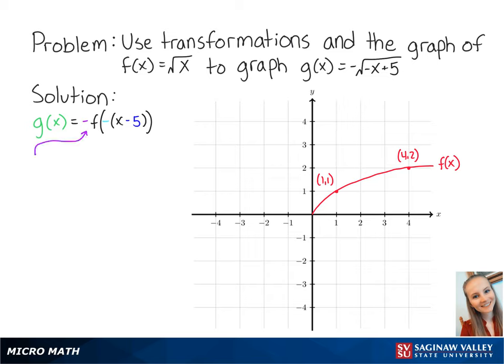The negative function means that we will reflect the graph over the x-axis. So our new points are at (1, negative 1) and (4, negative 2). Connecting the points, we get the graph of negative f(x).